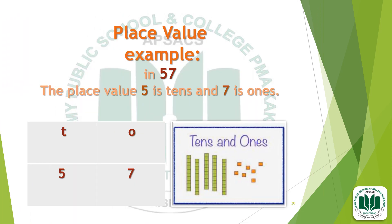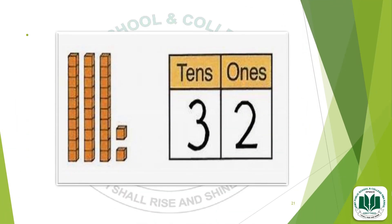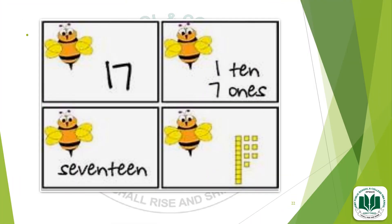Now I explain the next topic: place value. In 57, the place value of 5 is tens, and the place value of 7 is ones. T stands for tens, O stands for ones. In this example, there are 3 tens and 2 ones, so the place value of 3 is tens and the place value of 2 is ones. In 17, the place value of 1 is tens, and 7 is ones.